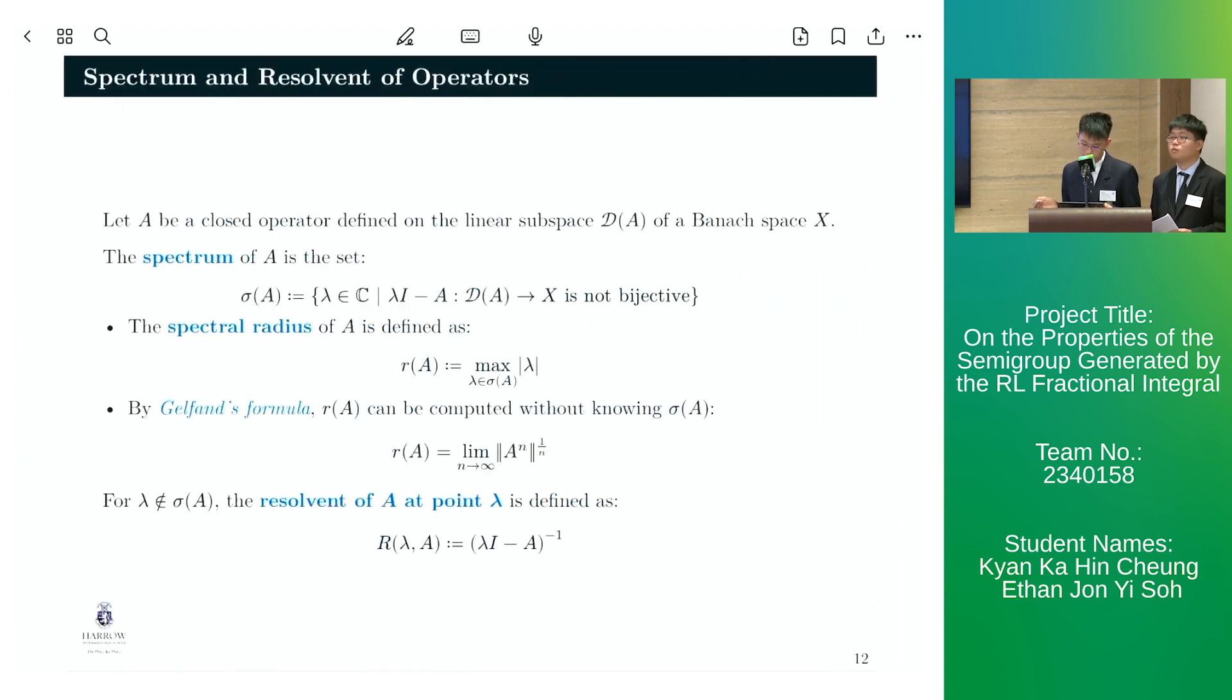Now, suppose that a is a closed operator, then the spectrum of a is defined to be the set of all lambda, such that the mapping lambda i minus a is not bijective. We then have that the spectral radius of a is defined to be the largest lambda in the spectrum of a.